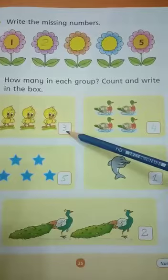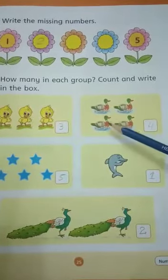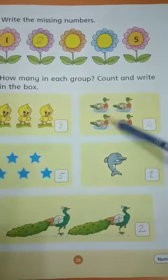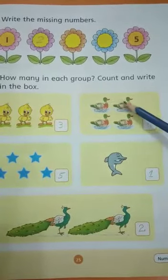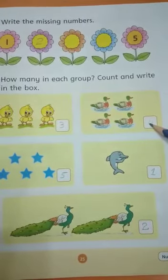Here you have to write. These ducks are 4 — 1, 2, 3, 4. Here you have 4, write.